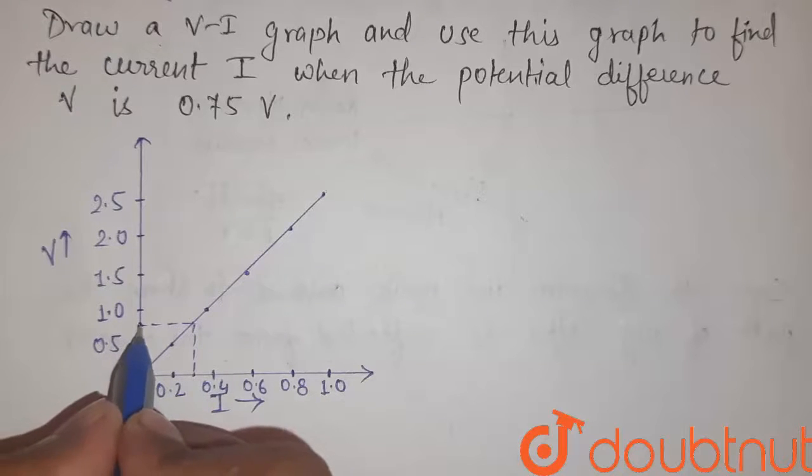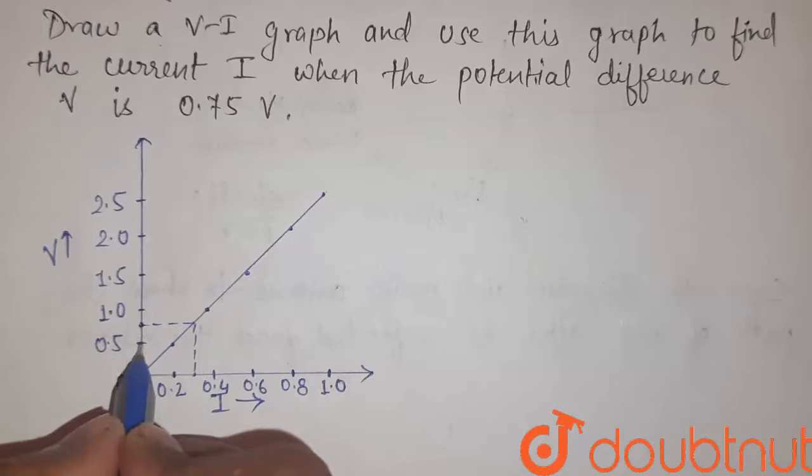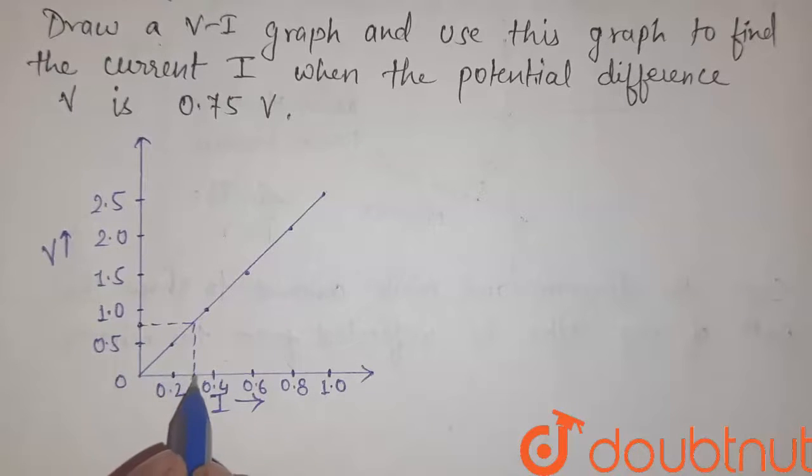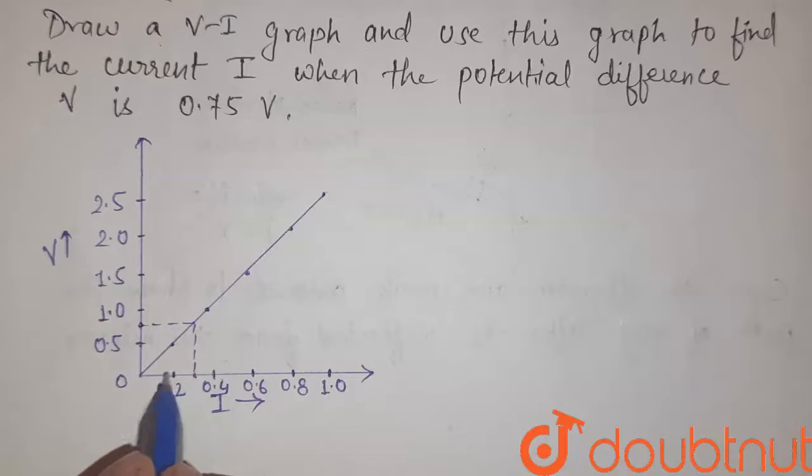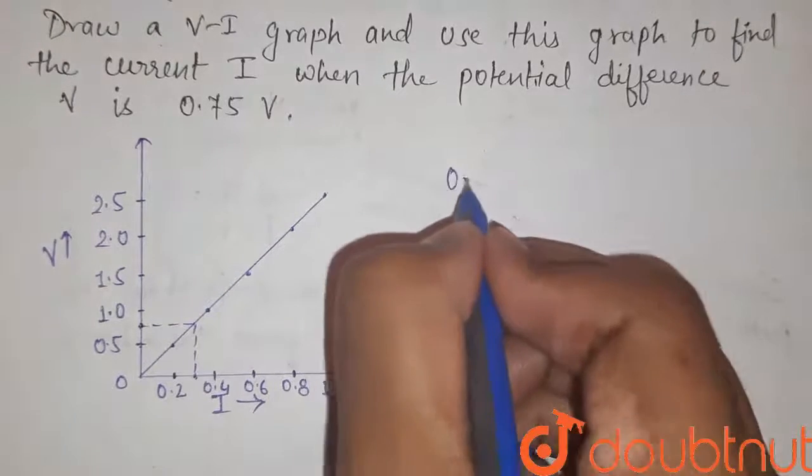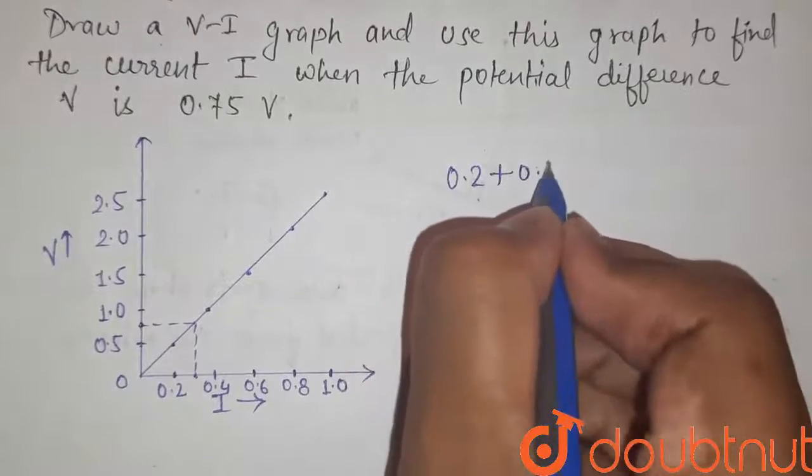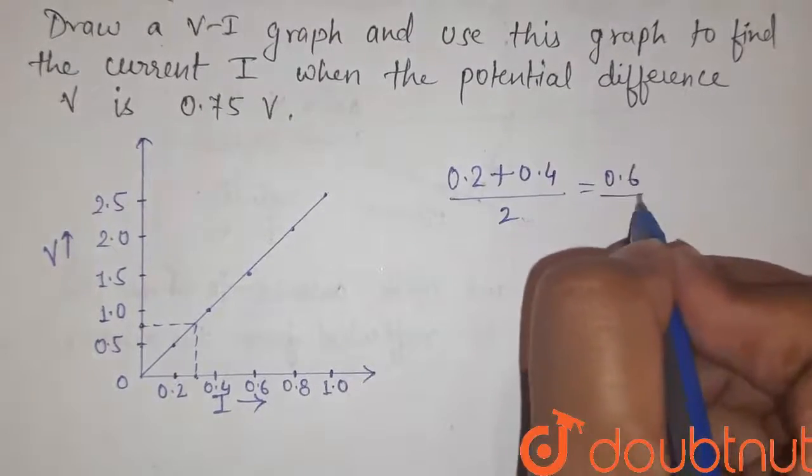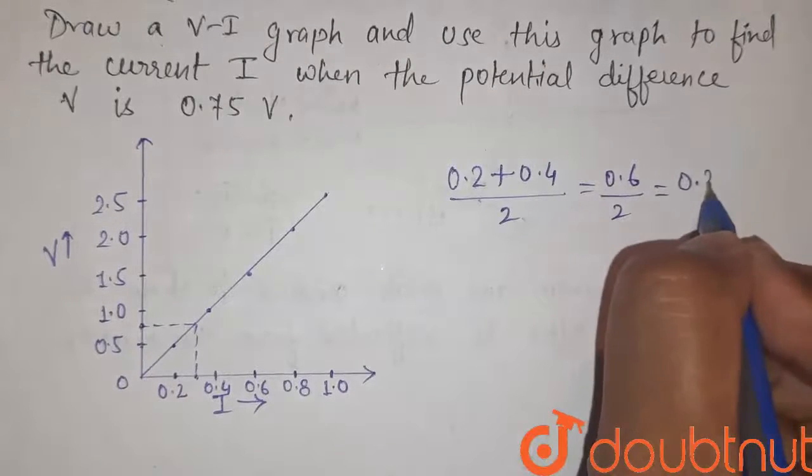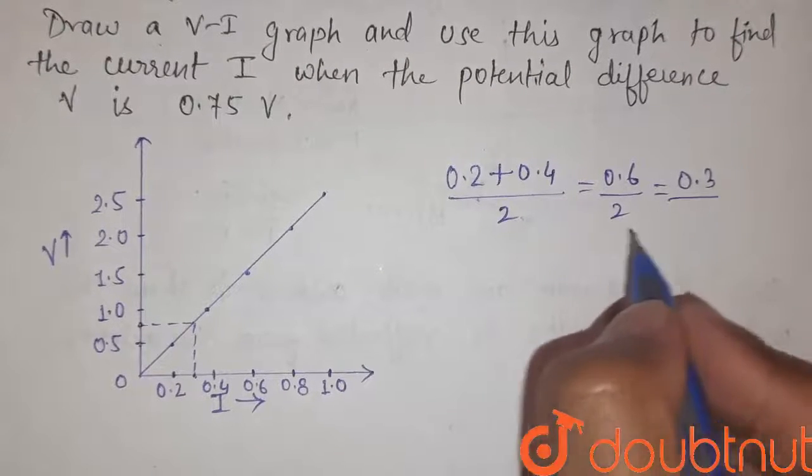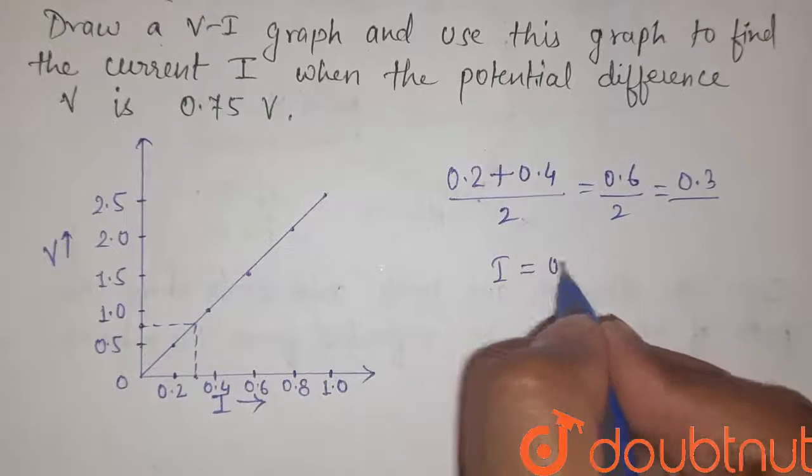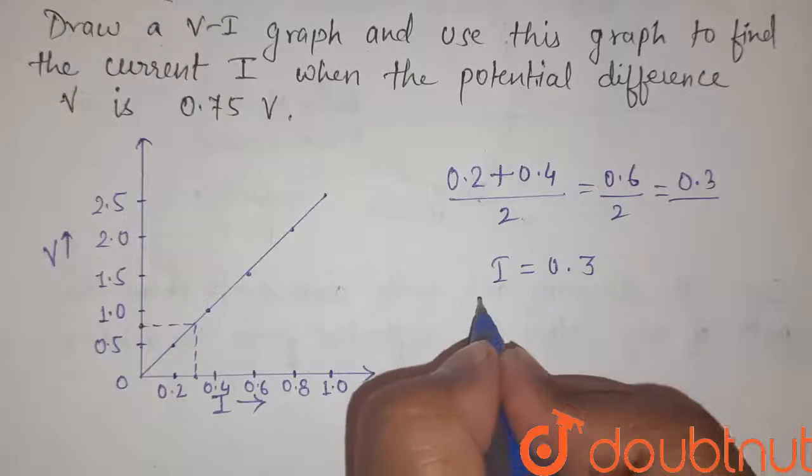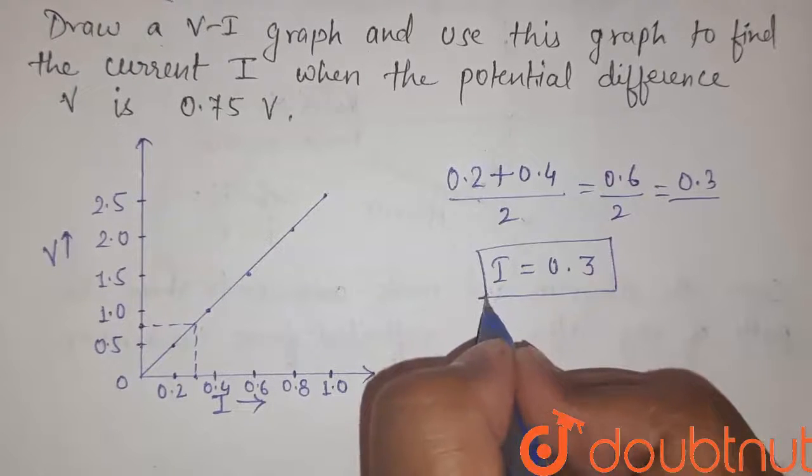Now since 0.75 is the midpoint of these two points (that is 1.0 and 0.5), therefore this value of I will be the midpoint of these two points. So the midpoint of 0.2 and 0.4 will be what? It will be 0.6 by 2, that is 0.3. So this is the corresponding value of I for voltage 0.75. So this is our answer. Thank you.